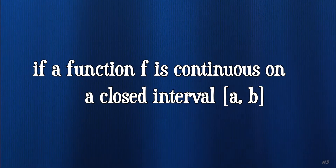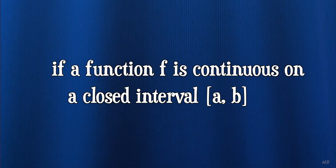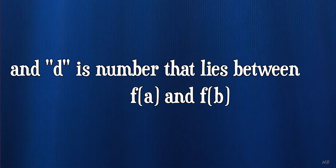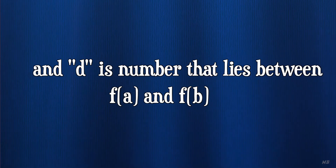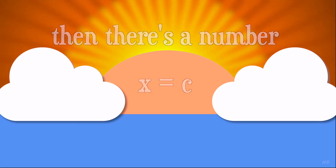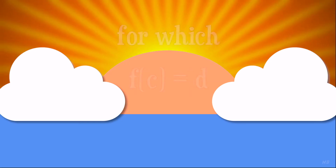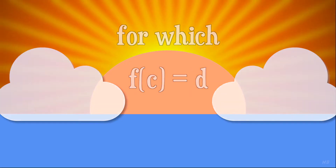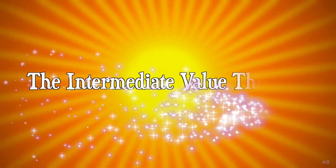If a function f is continuous on a closed interval a to b, and d is a number that lies between f of a and f of b, then there's a number x equals c in the open interval a to b, for which f of c equals d. And that's the conclusion of... the Intermediate Value Theorem.